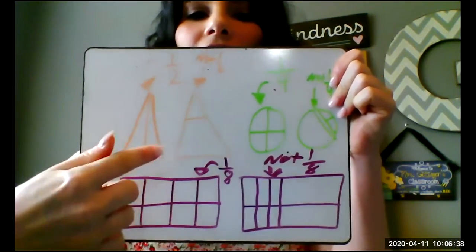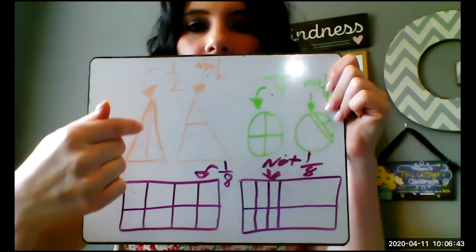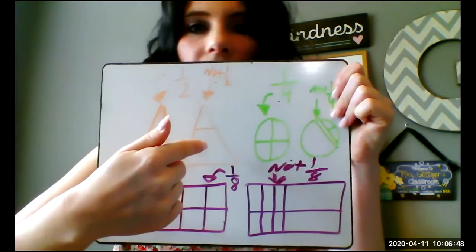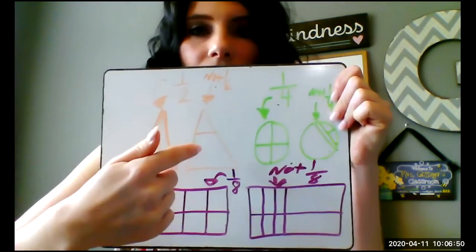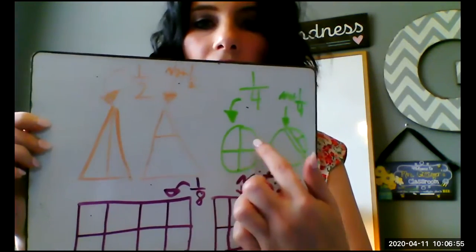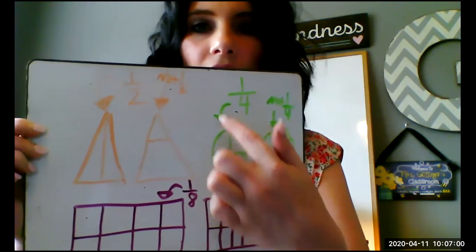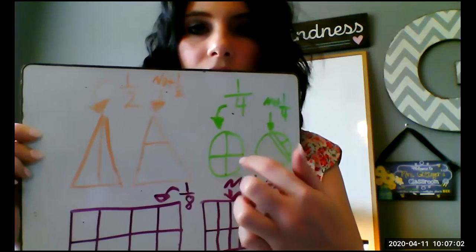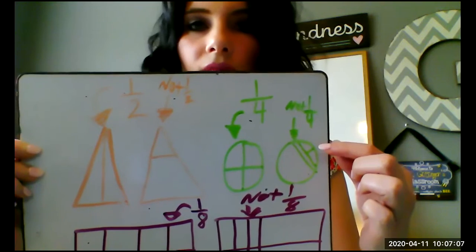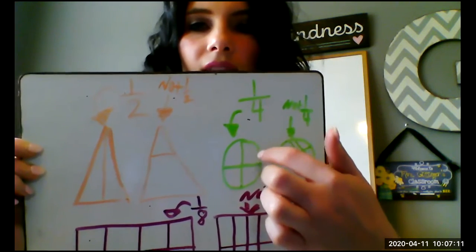If I have a triangle right here and I have it split straight down the middle, this is my one half. This is not one half — not the same. Then I have my one fourth over here: I have a pie and it's divided into four slices. That is my one fourth. This is not one fourth — it's not equal, not equal slices. Everybody needs an equal piece.